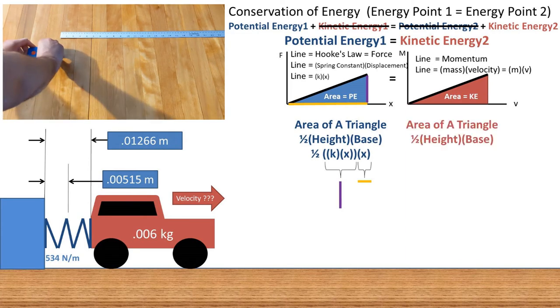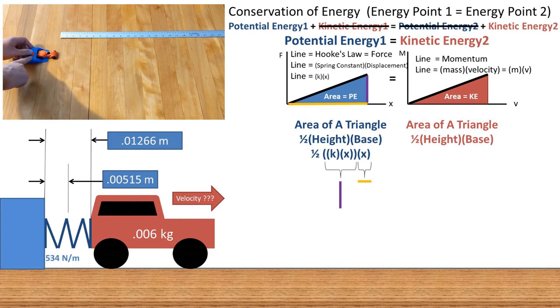It once again makes a triangle with area of 1 half height times base. The height now is once again the y value at a point, which is the mass times the velocity. And the base is the v distance from the origin, which is the change in velocity.